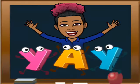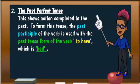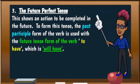To recap: the present perfect tense shows an action completed in the present. To form this tense, the past participle form of the verb is used with the present tense form of the verb 'to have,' which is 'has' or 'have.' The past perfect tense shows action completed in the past; to form it, the past participle is used with 'had.' And lastly, the future perfect tense shows an action to be completed in the future; to form this tense, the past participle is used with the future tense form of 'to have,' which is 'will have.'